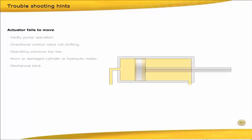Actuator fails to move. Faulty pump operation. Directional control valve not shifting. Operating pressure too low. Worn or damaged cylinder or hydraulic motor. Mechanical bind.